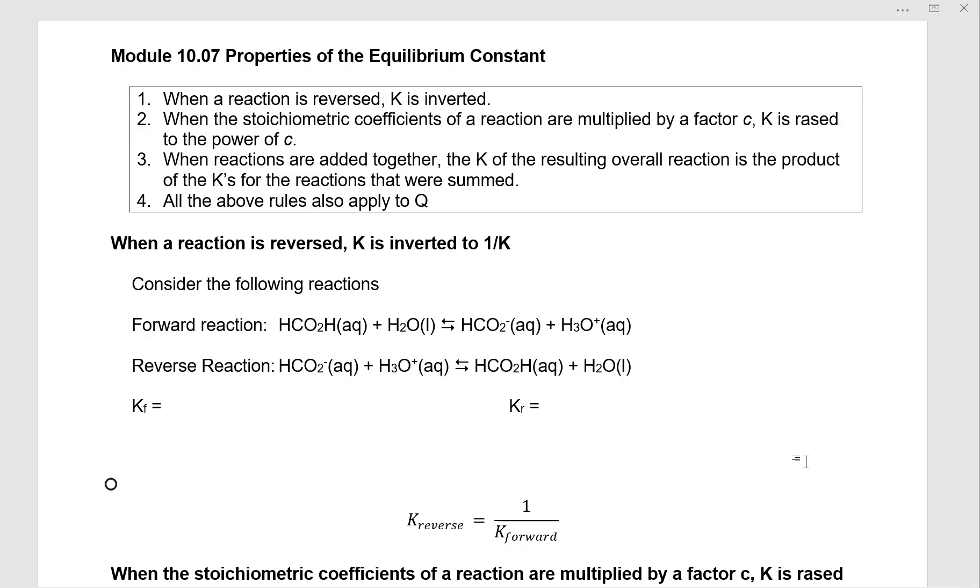if the stoichiometric coefficients of a reaction are multiplied by a factor c, K is raised to the power of c. When reactions are added together, the K of the resulting overall reaction is the product of the K's for the reactions that were summed.